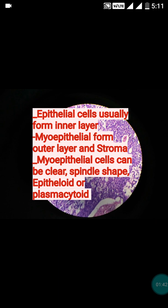Epithelial cells are usually present in the inner layer of the gland tubules or cyst, while myoepithelial cells form the outer layer of such tubules or glands, or they can be present in the stroma. One important point: myoepithelial cells can be clear, spindle-shaped, epithelioid, or plasmacytoid — these are the various shapes and architectures of myoepithelial cells.